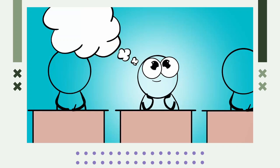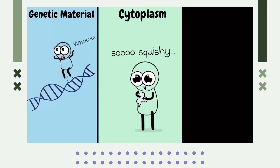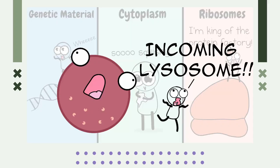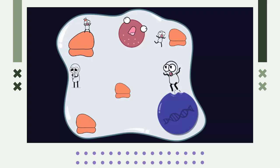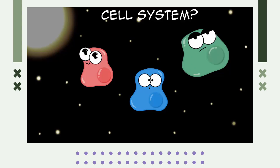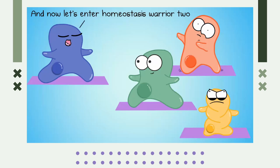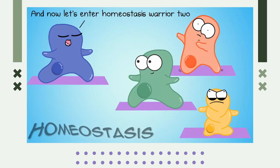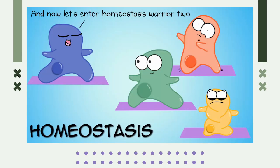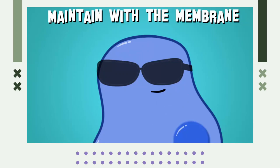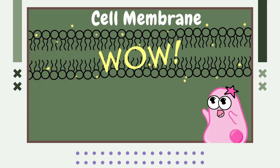The following video explains transport in cells. All cells contain genetic material, cytoplasm, and ribosomes; eukaryotes additionally have membrane-bound organelles. Cells need to interact with their environment and maintain homeostasis by controlling what goes in and out — a function regulated by the cell membrane, described as the homeostasis king.